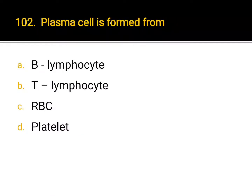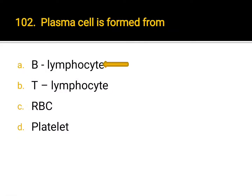Plasma cell is formed from: A. B lymphocyte, B. T lymphocyte, C. RBC, D. platelet. Correct answer: A. B lymphocyte.